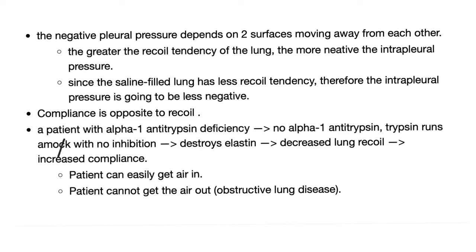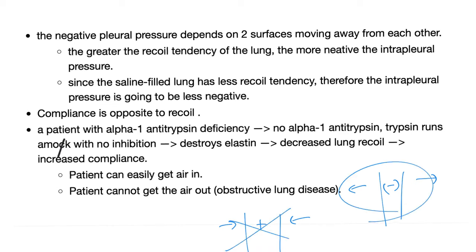What causes the negative intrapleural pressure? Any two surfaces that are moving away from each other create a negative pressure. The lungs tend to recoil inward; the chest wall tends to expand outward. Moving away from each other, they create a negative intrapleural pressure in between, which tries to pull them back together and prevents them from moving apart.